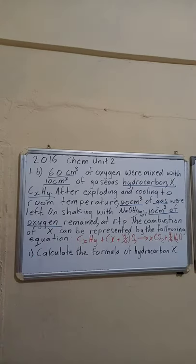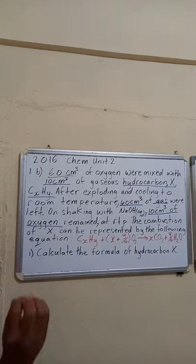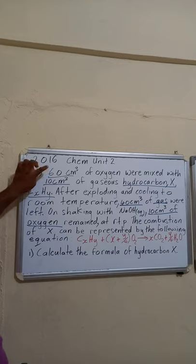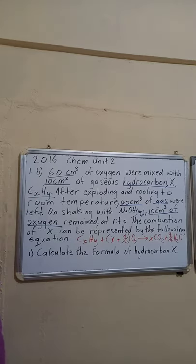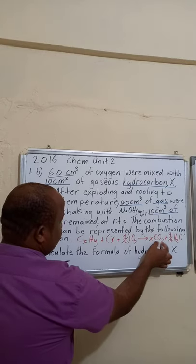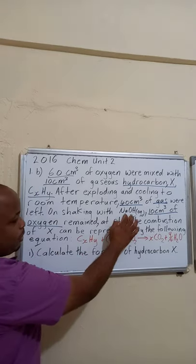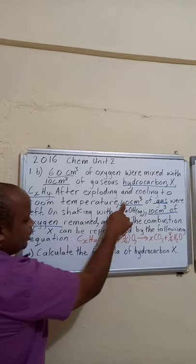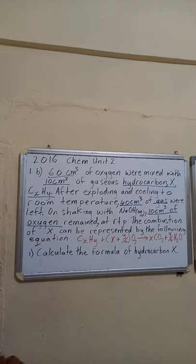They give us an equation and ask us to calculate the formula for hydrocarbon X. We pick out the information: we started with 60 cm³ of oxygen, 10 cm³ remained, so 50 cm³ reacted. After the reaction, 40 cm³ of gas were left; 10 cm³ was oxygen, so 30 cm³ is CO₂.